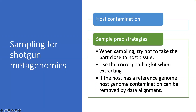This slide distinguishes shotgun metagenomics from a service we'll talk about later. When sampling for shotgun metagenomics and you're interested in the microbiota and microbiome, sample for that and avoid host contamination as much as possible. If that's not possible, you may need to consider other methods. Later on, we'll get into amplicon shotgun metagenomic sequencing, where you target specific genetic regions, and also PCR product sequencing for things like viruses.